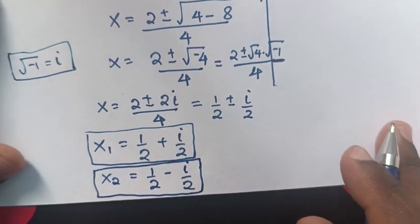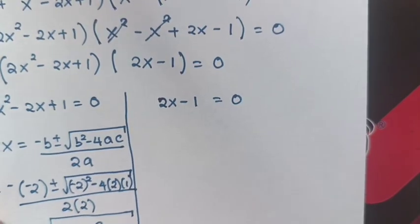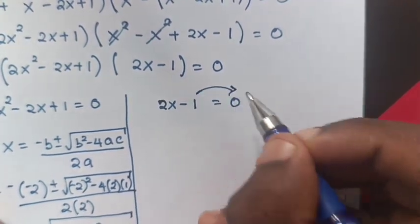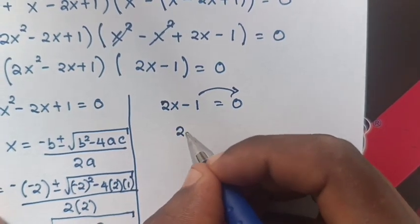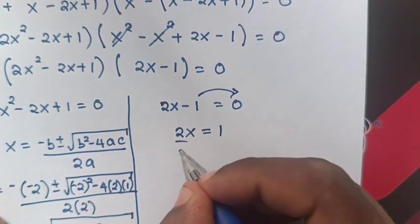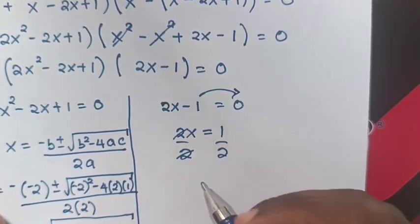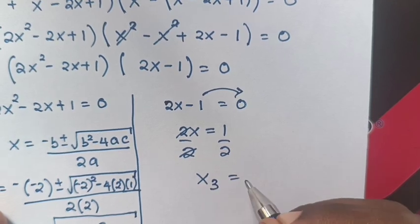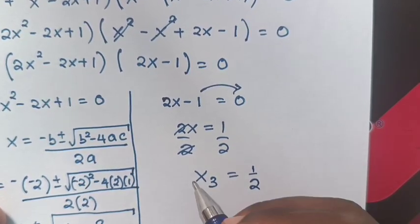Those are the complex solutions. The other solution comes from 2x equals 1. Dividing both sides by 2, x equals one half. This is the value of x₃.